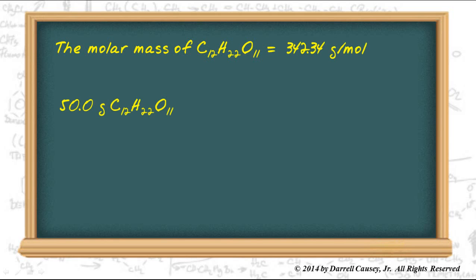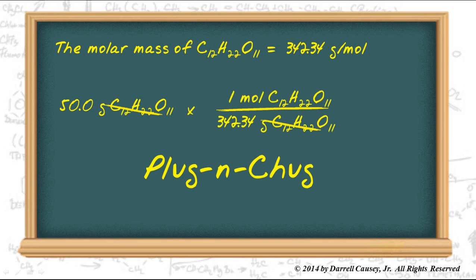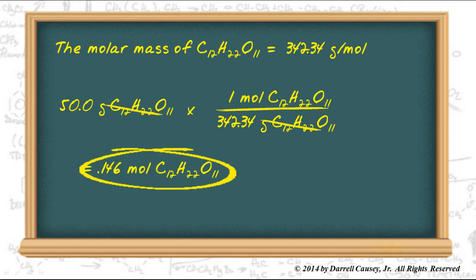I'm going to change our 50 grams of sucrose into moles by multiplying by the molar mass. Plug and chug and we get 0.146 moles of sucrose.